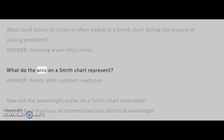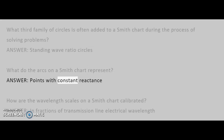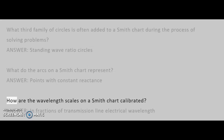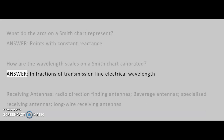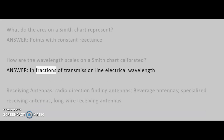What do the arcs on a Smith chart represent? Answer: Points with constant reactance. How are the wavelength scales on a Smith chart calibrated? Answer: In fractions of transmission line electrical wavelength.